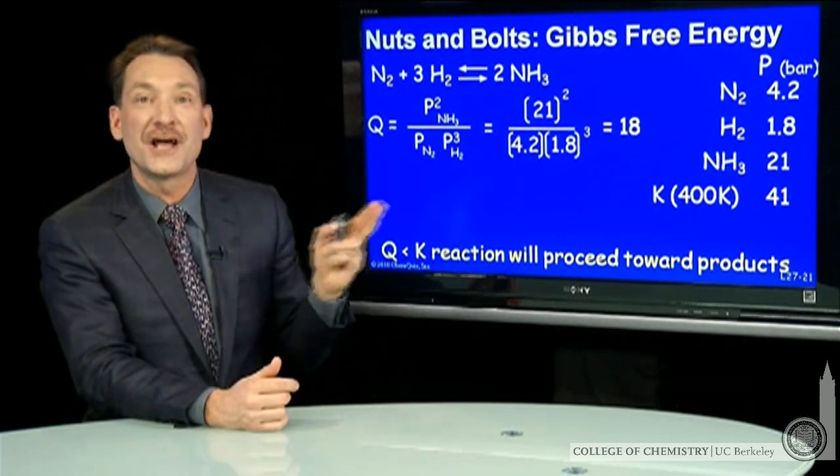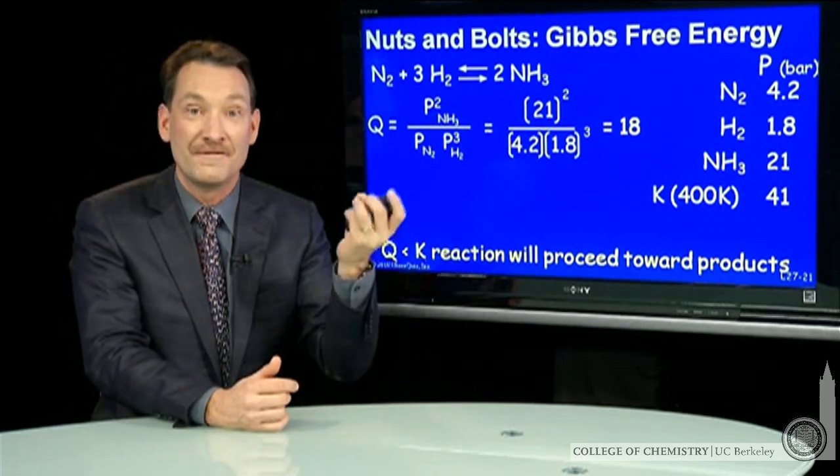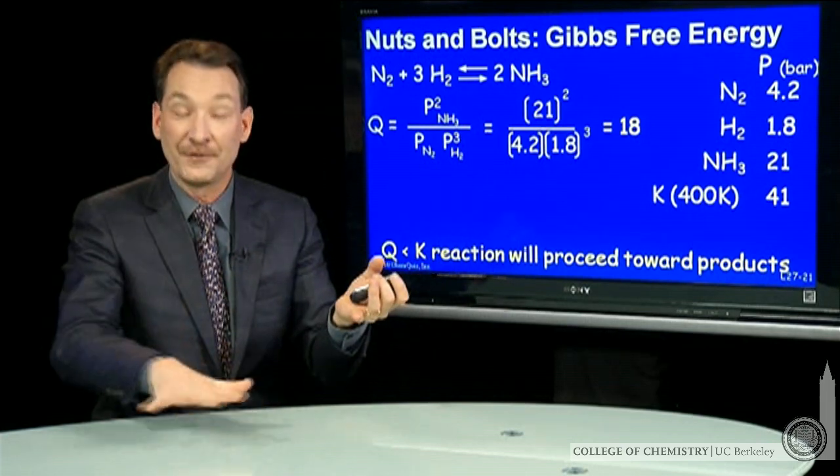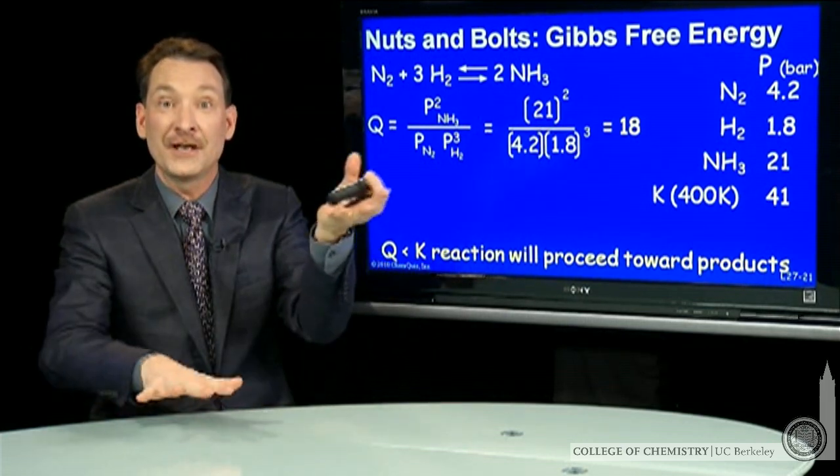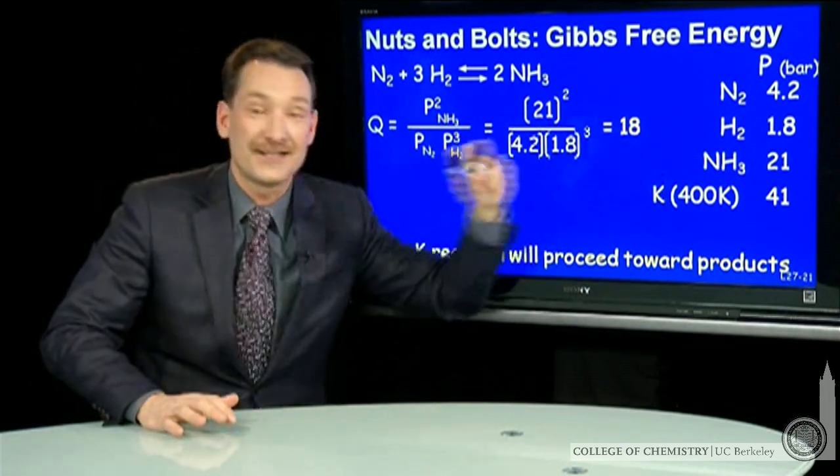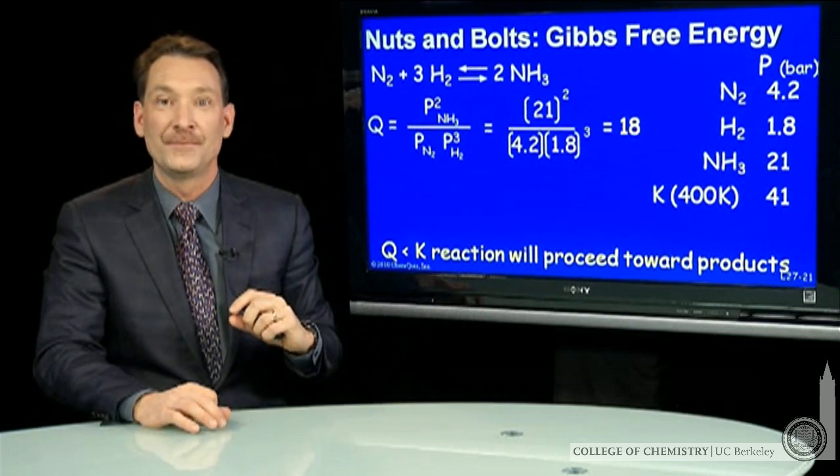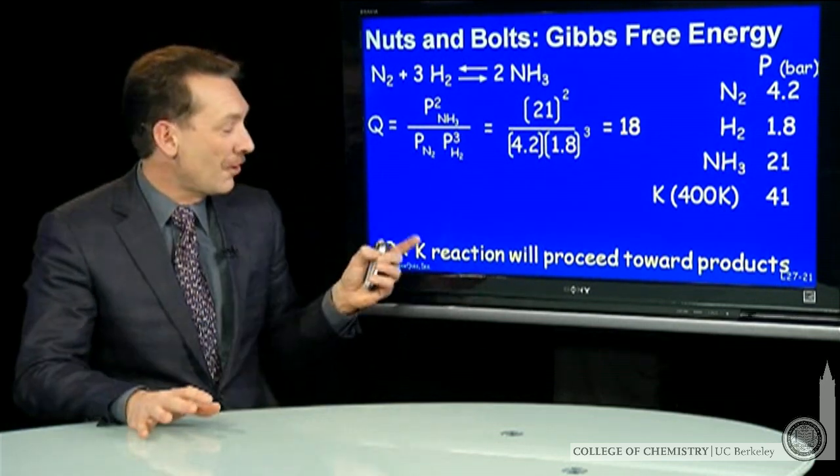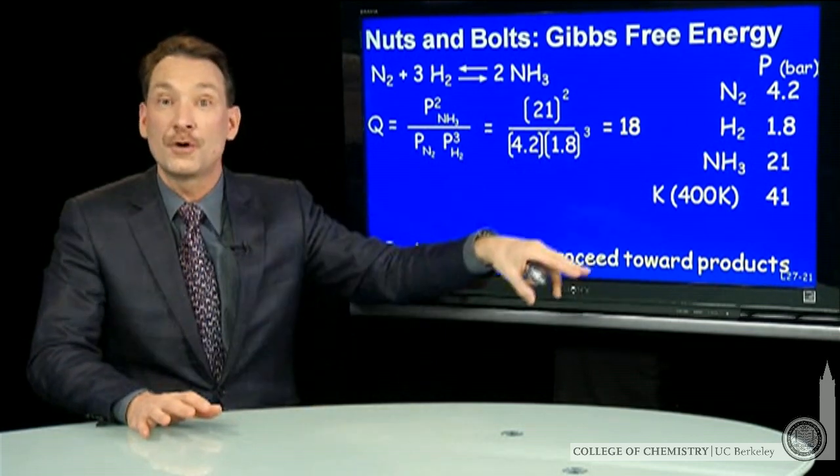For this reaction, I also wanted to calculate the value of delta G, the difference between the free energies of the products and the free energies of the reactants at these conditions. Now, I should anticipate that that's going to be negative because I've already said the reaction's going to go towards products.